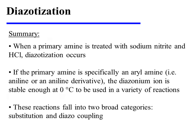In summary, when a primary amine is treated with sodium nitrite and HCl, diazotization occurs. If the primary amine is specifically an aryl amine — that is to say, aniline or an aniline derivative — the diazonium ion is stable enough at zero degrees to be used in a variety of reactions. These reactions fall into two broad categories: substitution and diazocoupling.